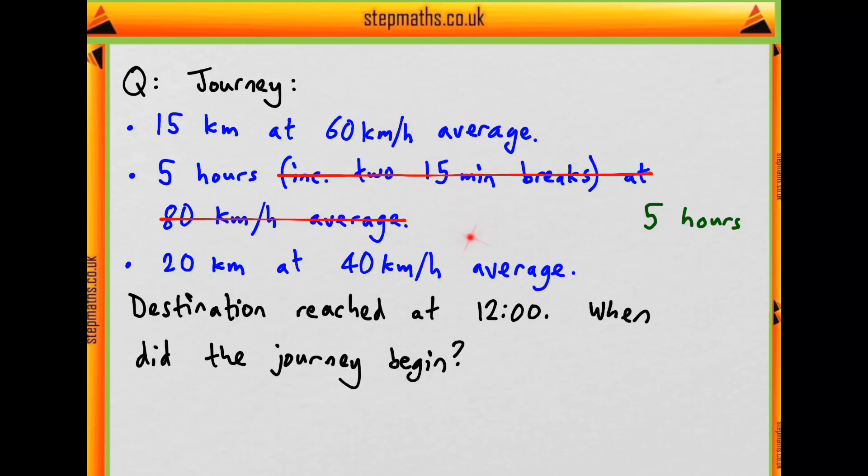And so for these two stages where we're given the average speed and the distance, how do we work out how long they take? For this section we have 15km where we go at 60 average. So if it takes one hour to go 60km, then how long would it take to go 15? Well, 15 is a quarter of 60, so naturally it follows that it would take a quarter of an hour or 15 minutes.